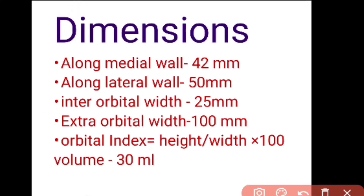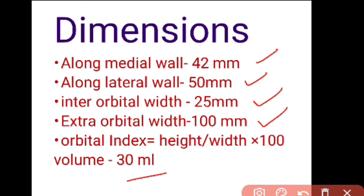To revise the dimensions: along the medial wall the depth is 42 millimeters, along the lateral wall it is 50 millimeters. Inter-orbital width is 25 millimeters, and between the two lateral walls it is 100 millimeters. The orbital index is height divided by width multiplied by 100, useful in differentiating racial configurations, and the volume of the orbit is 30 mL.